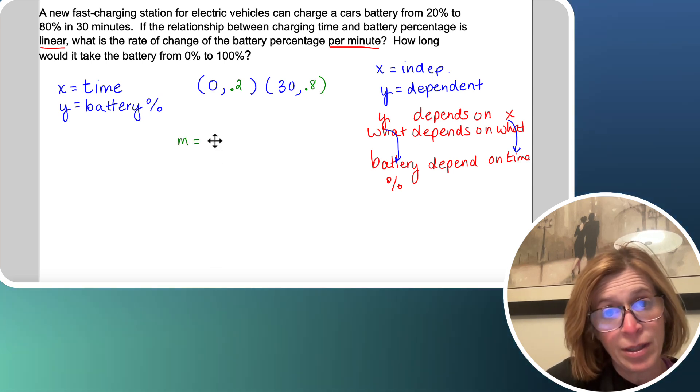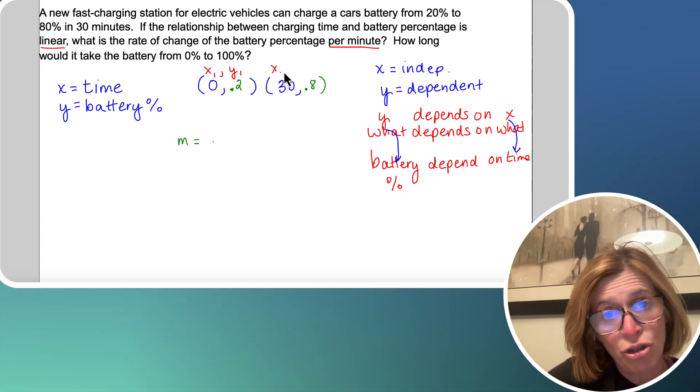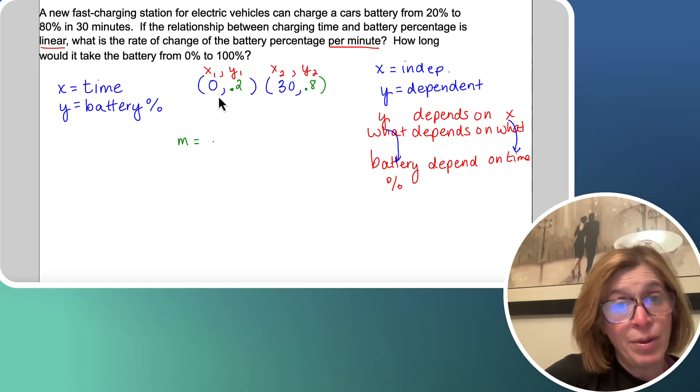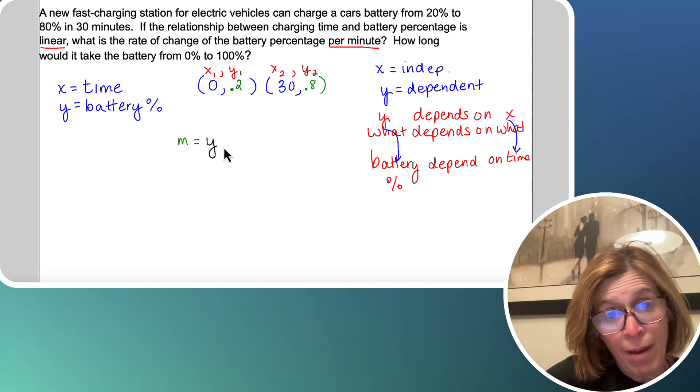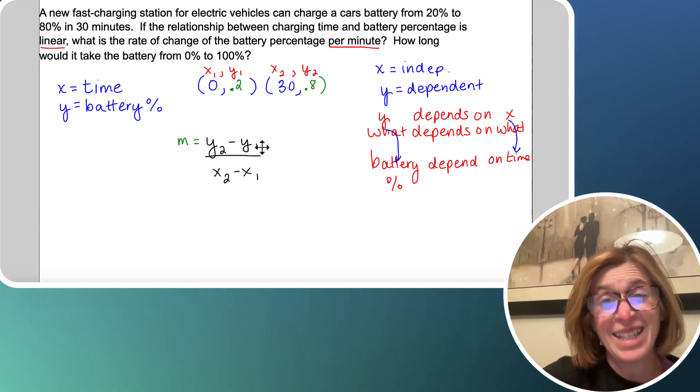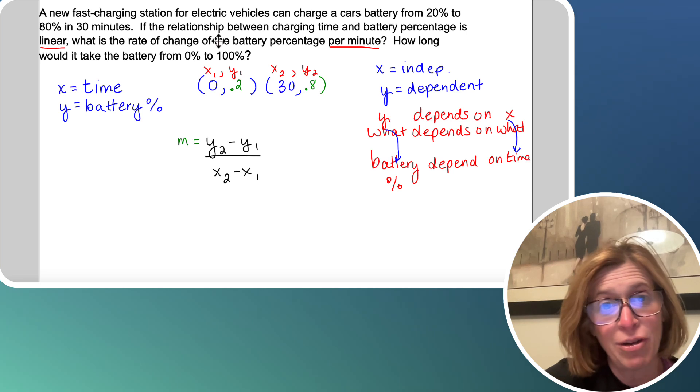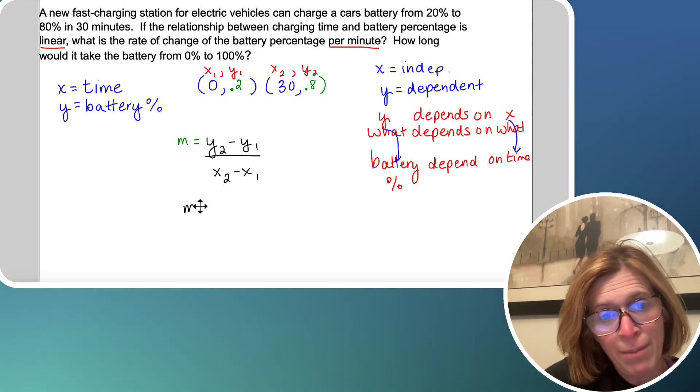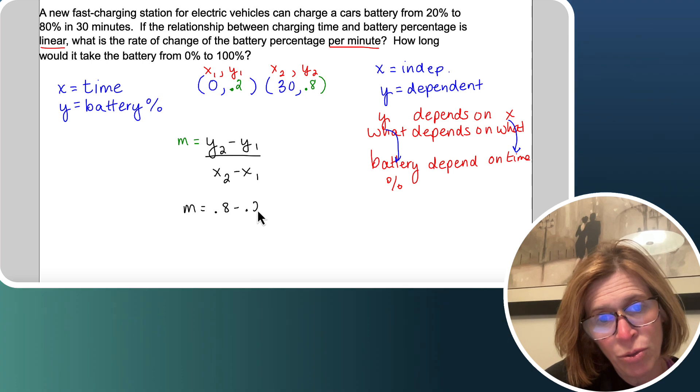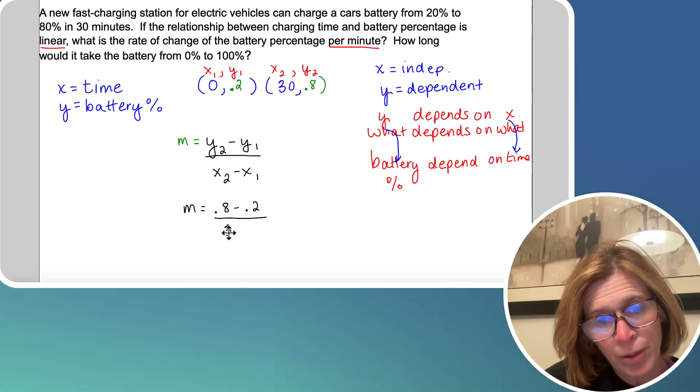So now we calculate the slope. I'm going to label my points X1, Y1, X2, Y2, and then I'm going to plug them right into the formula. Reminder, the formula is Y2 minus Y1 over X2 minus X1. And until you get that memorized, I actually might have it on a little sticky note on my computer.